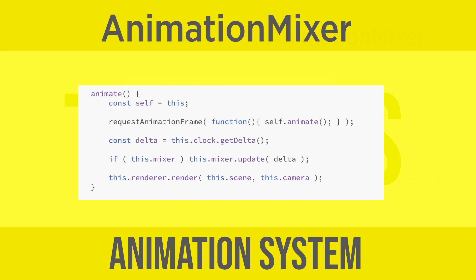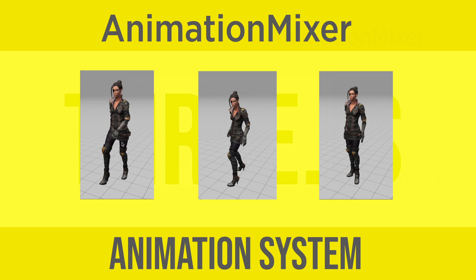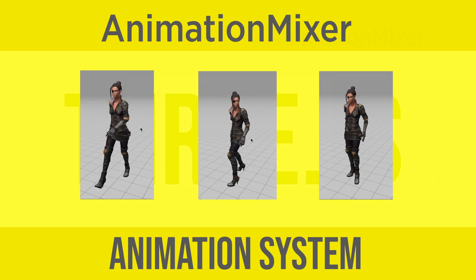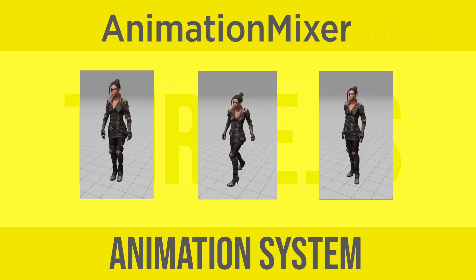The 3GS animation system is very versatile. If you are creating your own animations, you could have an animation layer that controls the arms, perhaps another that controls the head, and a main layer — then have individual control over different body parts by setting their weights.